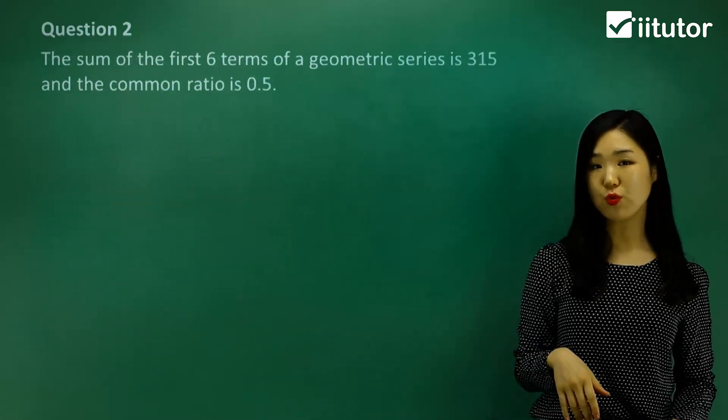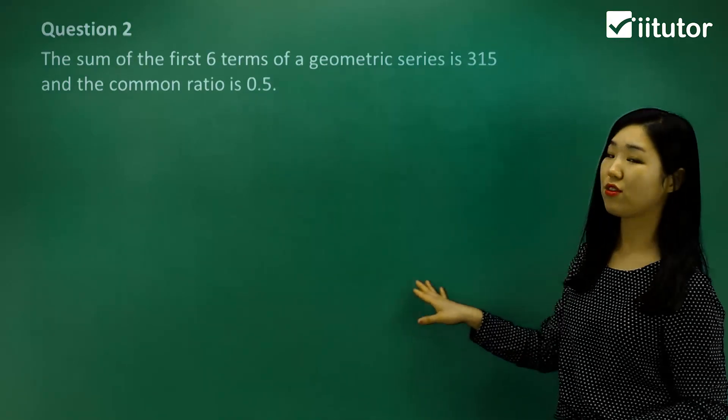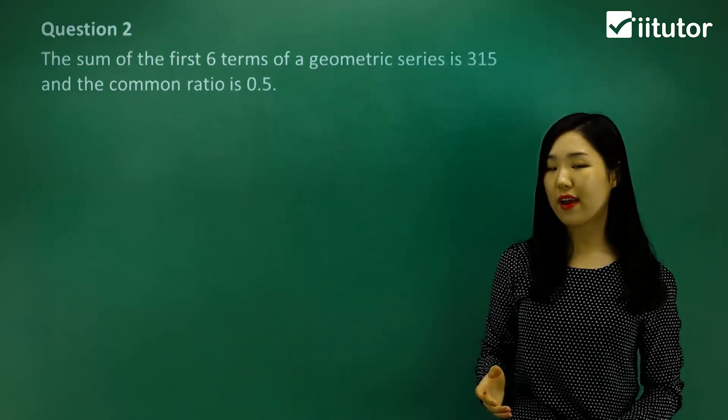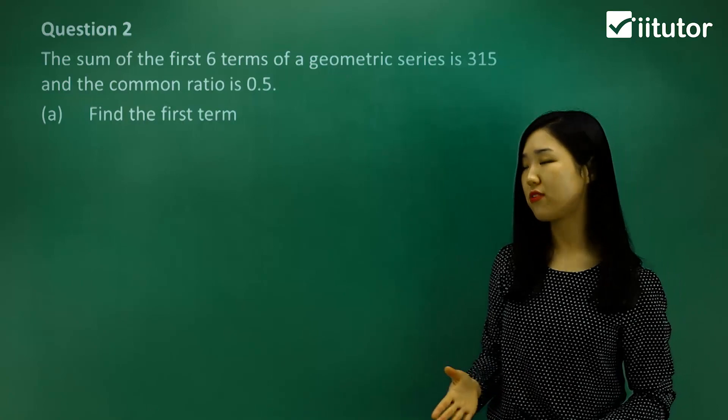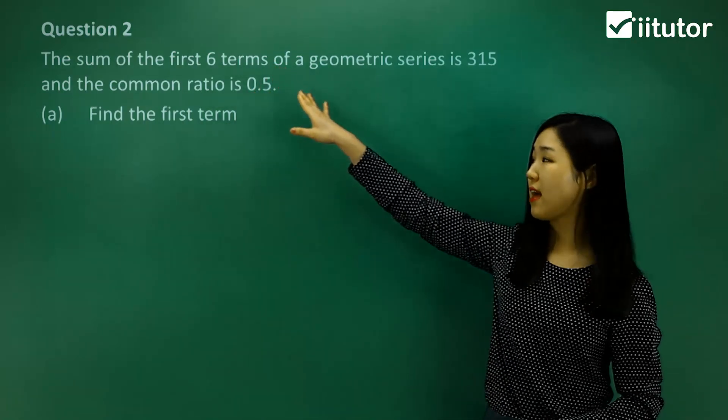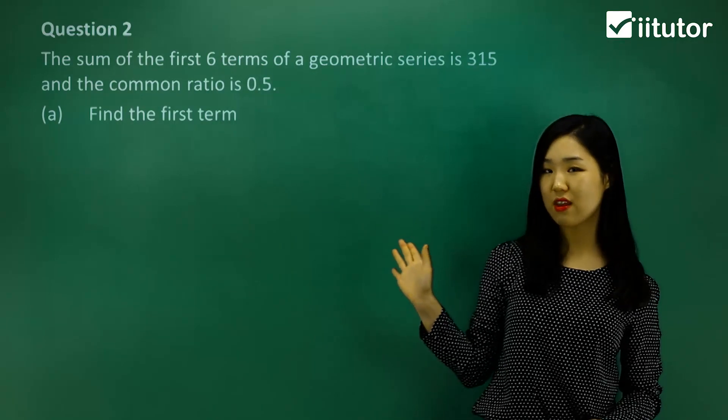Now let's go to question 2. The sum of the first 6 terms of a geometric series is 315, and the common ratio is 0.5. First of all what we want to do is find the first term. Now we don't know what the first term is, we have to find that. But we do know what the common ratio is, and they do tell us that the sum of the first 6 terms is 315. So I'm going to utilize that information.